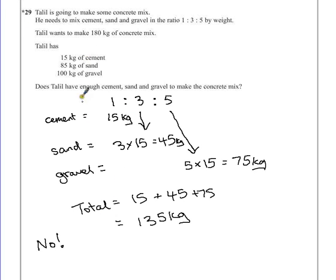Why is the answer no? If there's a star, always make sure that you justify your answer. So he's only got enough cement to make 135 kilograms of concrete.